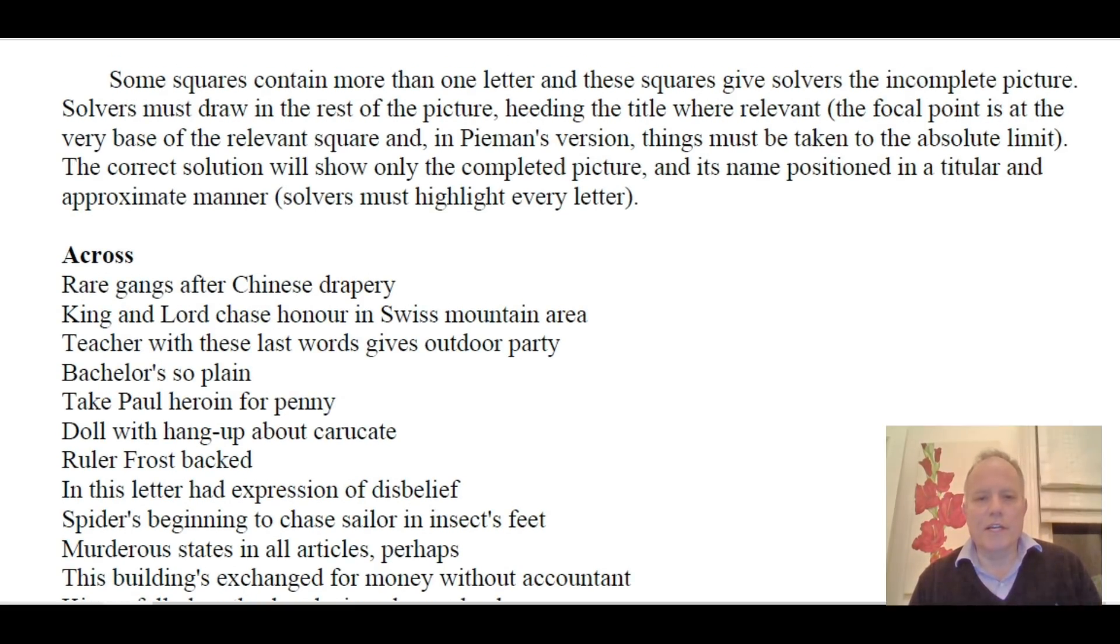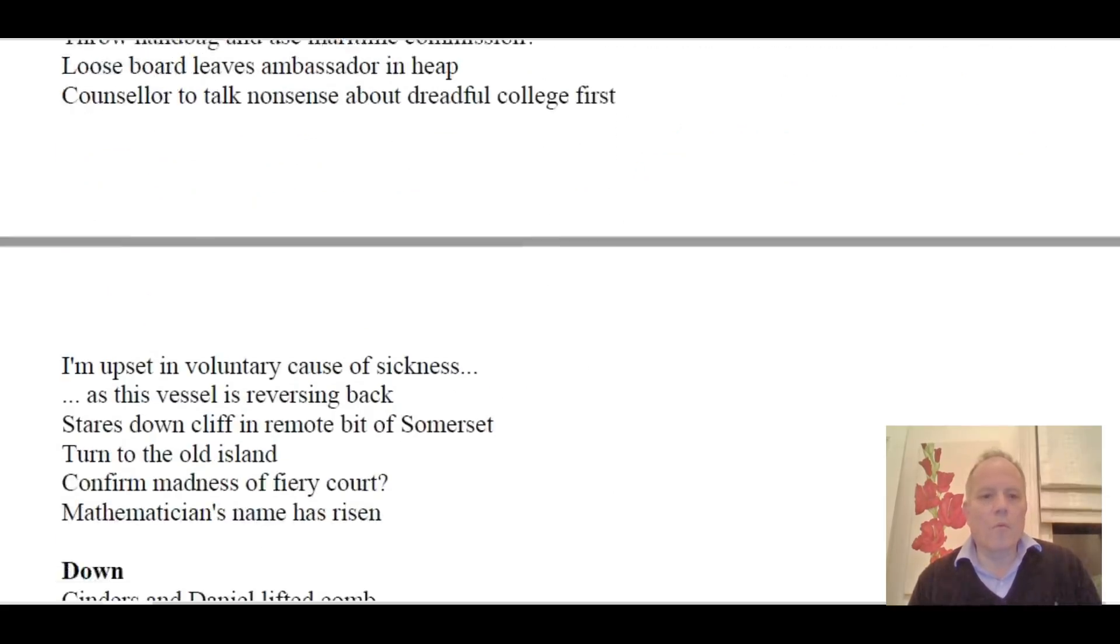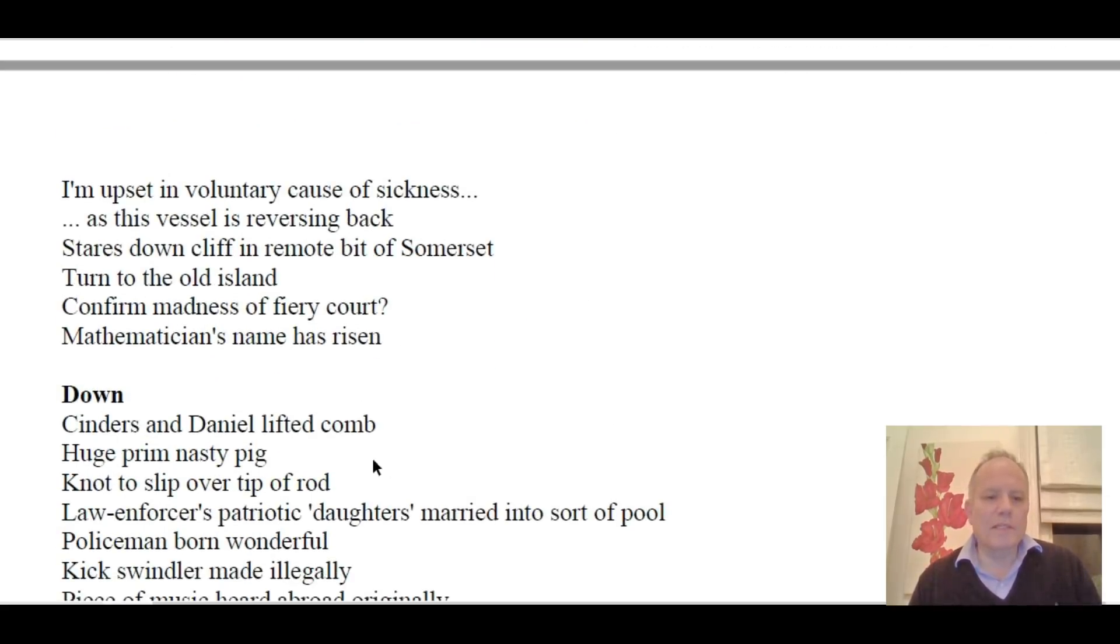The tradition in these kind of themed cryptics is that you can go to any definition in Chambers dictionary and use those. Let's just look at one down, for instance: cinders and Daniel lifted comb. What you'd need to know to solve that is that red, one of the meanings of red as a verb instead of the color, can mean to comb, and that the word dander can mean the cinders or embers in a fire. So the answer to that clue is dander, with Daniel being represented by Dan, and then comb being red being lifted.